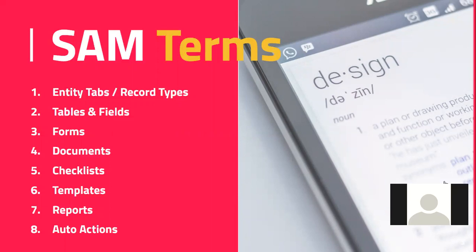So I was covering SAM terms — entity record tabs, record types at the top, and tables and fields, which are the backbone of every database. Now, the difference between forms and documents: in SAM, forms are data entry points for your team or end users, whereas documents are uploadable electronic versions of forms or files that you're collecting.